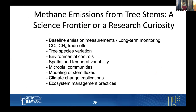Just a few remarks on where to go: baseline emissions are important to know — we don't know what these fluxes are or how they vary across ecosystems. Of course we need long-term monitoring. What are the trade-offs between CO2 and methane, and what is the trade-off between methane capture from soils versus emissions? This will be relevant for this community if you have eddy covariance measurements — what is the contribution from soils versus tree stems? What are the environmental controls, and which species are contributing?